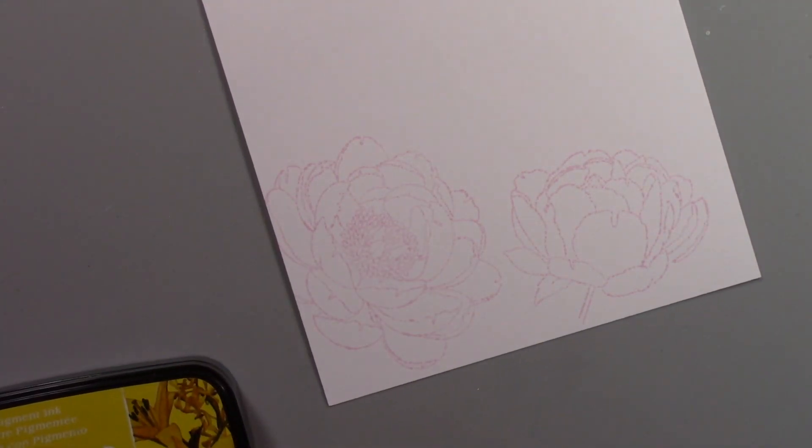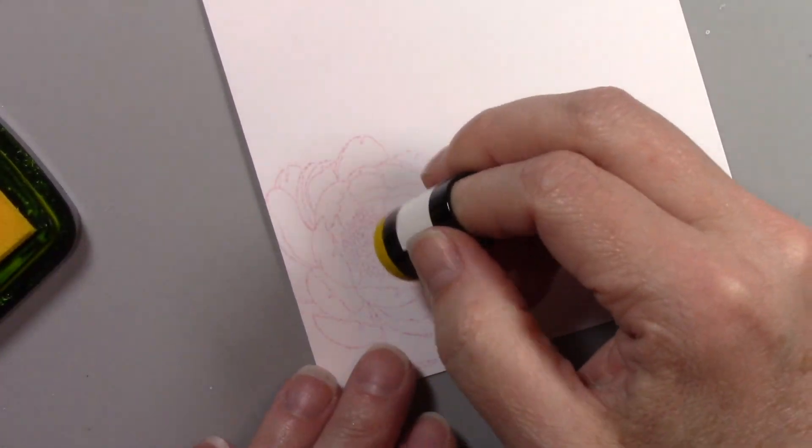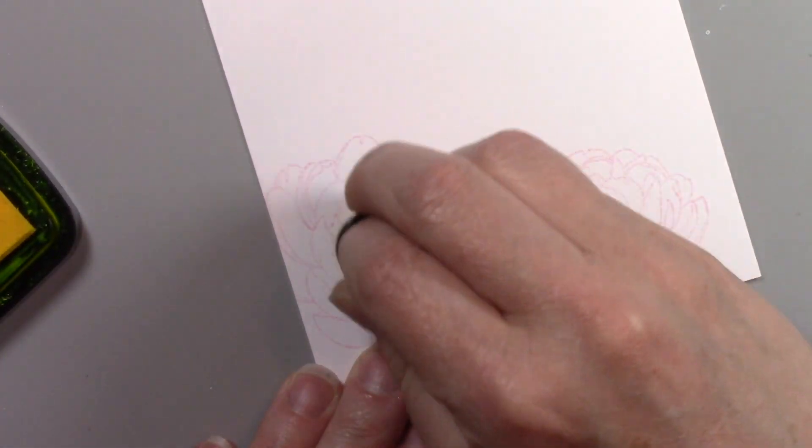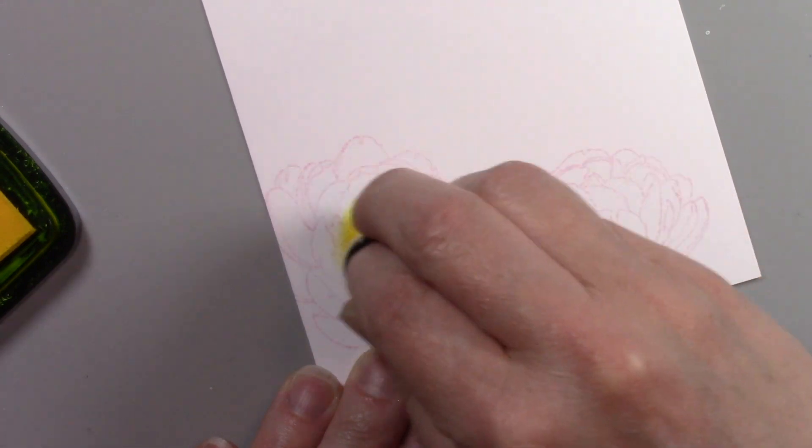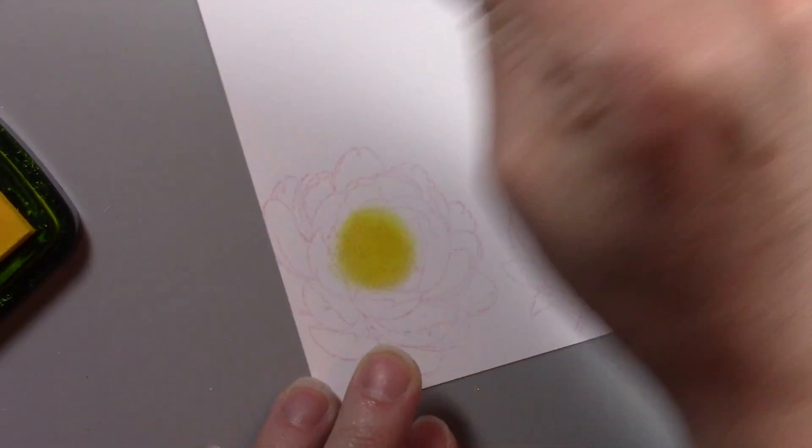Now I'm taking my VersaFine Clair, some of my favorite inks and this happens to be one of my favorite colors, cheerful, to color the center of those peonies and I'm just using a small sponge dauber to do so. You see I smear that ink in a little circle right in the center of the flowers.